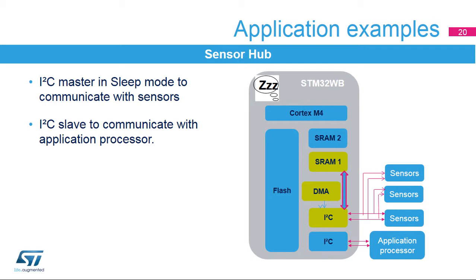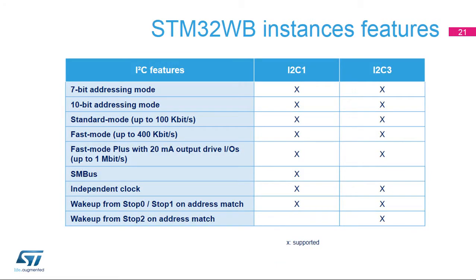Here is an example of a sensor hub application that requires several I2C peripherals. One or several I2C masters are used to interface with external sensors. An I2C slave is used to communicate with the application processor. STM32WB microcontrollers embed two I2C peripherals. I2C3 does not support SMBus extended hardware features and is the only one supporting wake-up from stop 2 on address match.